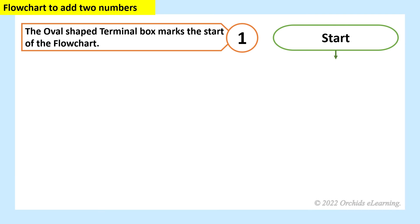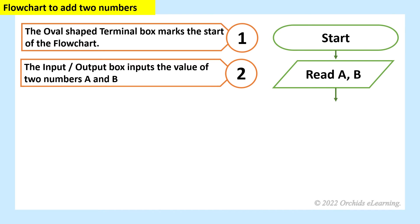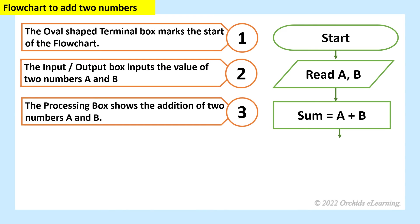Flow chart to add two numbers. The oval shaped terminal box marks the start of the flow chart. The input or output box inputs the value of two numbers A and B. The processing box shows the addition of two numbers A and B.